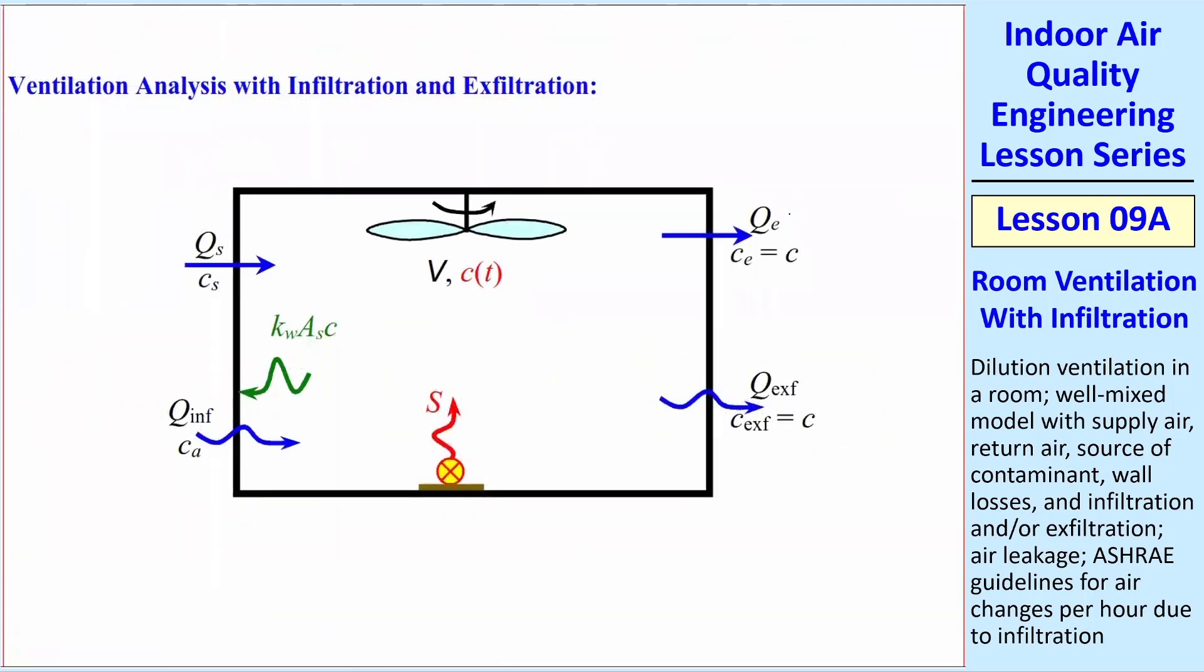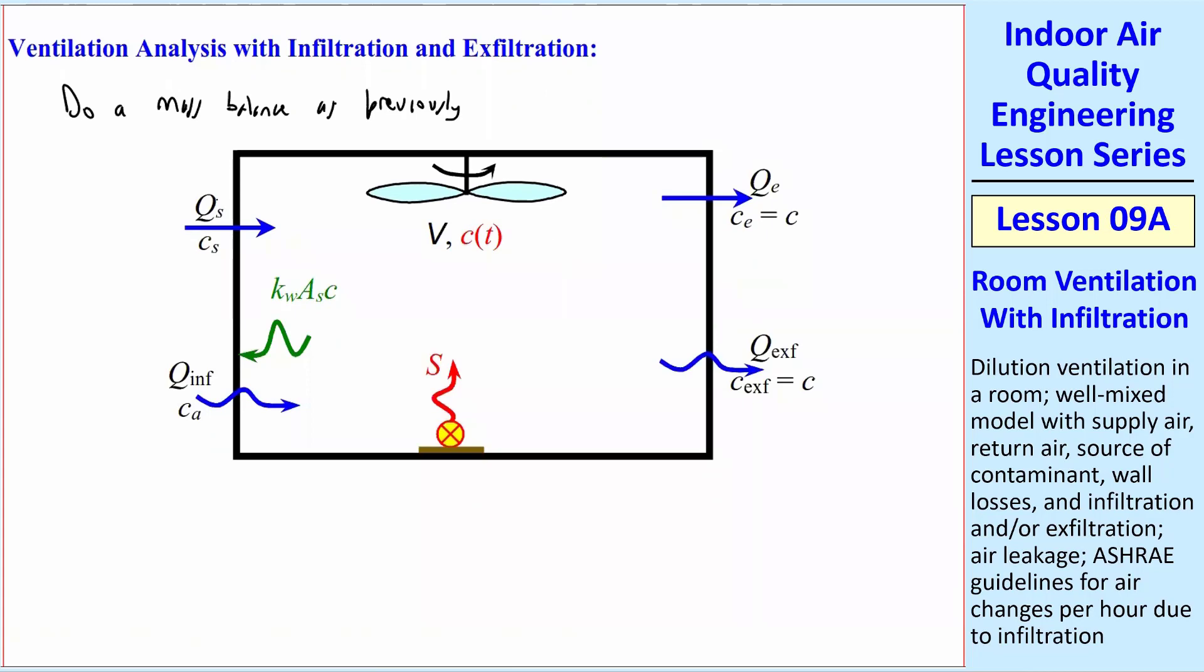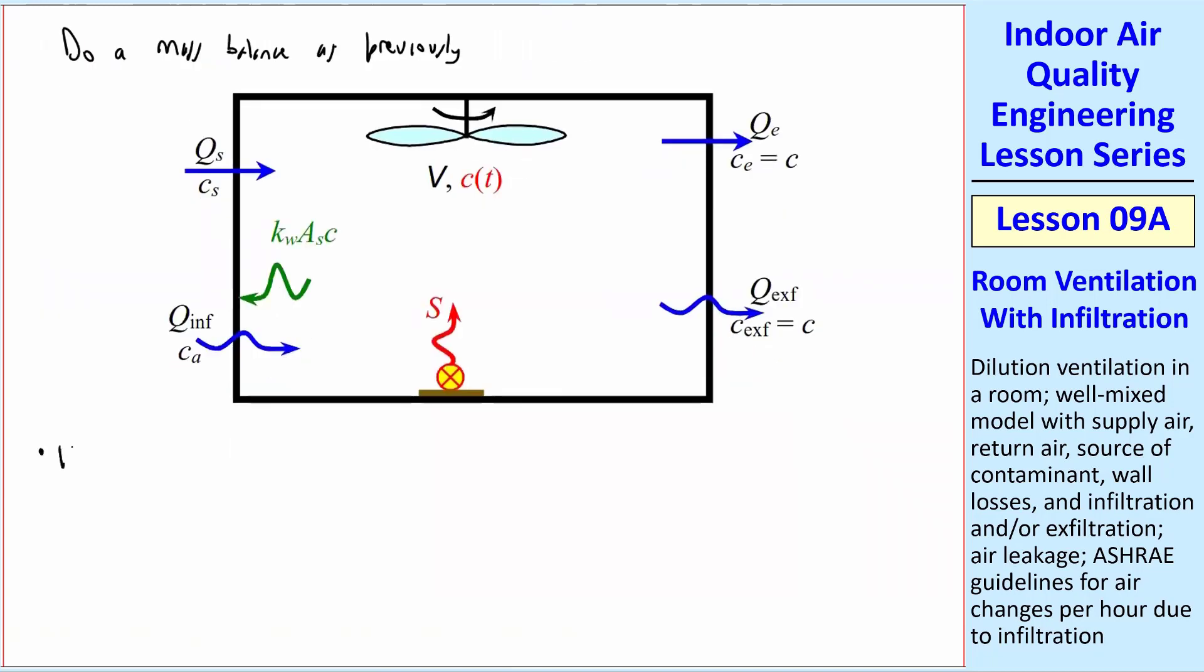Now let's get into the meat of how do we analyze this. So let's look at ventilation analysis with infiltration and exfiltration. What we're going to do is a mass balance. Previously, all we had was a Q coming in with C_S, Q_S C_S, and the same Q coming out. So we didn't need to do a bulk air mass balance, but we have to do that here.